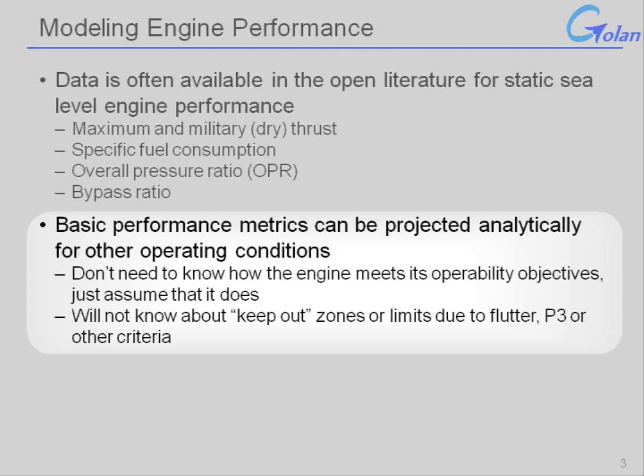When you do this, you have to understand you're not really modeling everything that goes into the engine operation — everything you would need to know to design and build the jet engine. You're modeling the trends. You're doing a data match and extrapolating to other design conditions. You won't know keep-out zones due to things like pressure limits in the engine, keep-out zones due to flutter, or other similar effects. But you will have a calibrated baseline that gives pretty good estimates for thrust and specific fuel consumption at other design conditions.